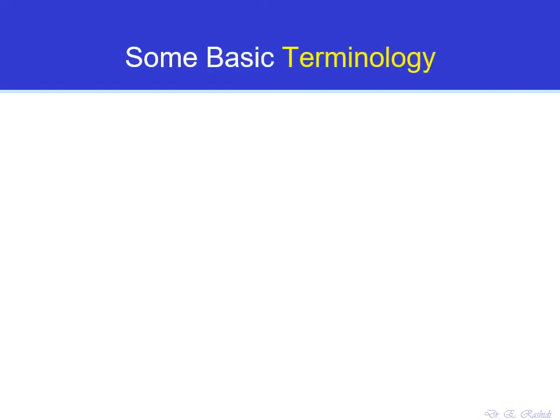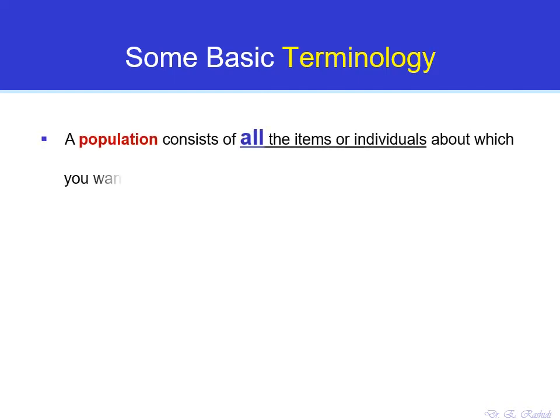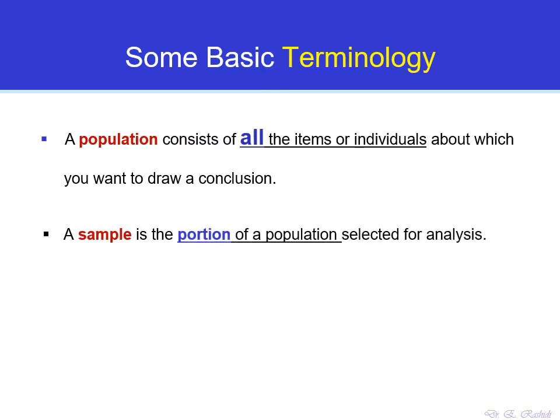Let's now learn about some basic and important terminology in statistics. In statistics we are interested in studying a group of things — a group of people, animals, items, or anything. The whole group of those things that you are interested in studying is called a population. But in real life, because of many restrictions, we cannot afford to study the whole population. So what we do in statistics is take a portion of the population — a subgroup — and study those. That is called a sample.